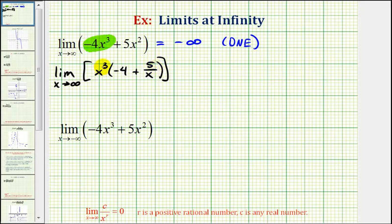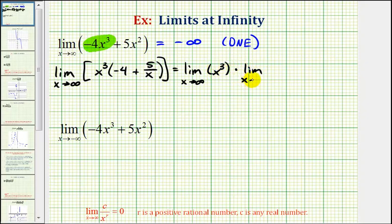Notice if we multiply x to the third times five divided by x, one factor of x would simplify out, leaving us with five x squared. Now because we have a product here, we can write this as a product of two limits: the limit as x approaches infinity of x to the third, times the limit as x approaches infinity of negative four plus five divided by x.